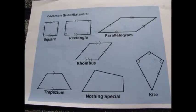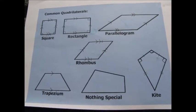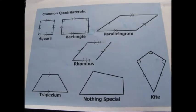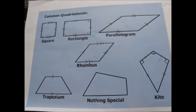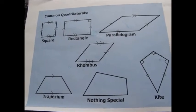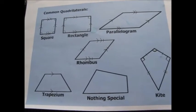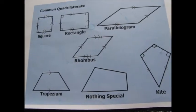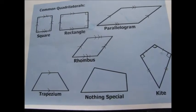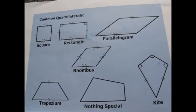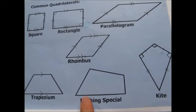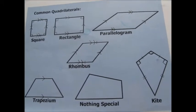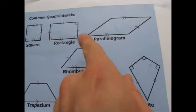In this second bonus video it's all about how to classify different quadrilaterals: parallelograms, rectangles, squares, rhombus, rhombi, trapezium, nothing special, kites and arrows. It says 'nothing special' but we don't actually know what that means yet.